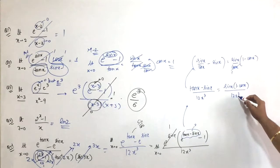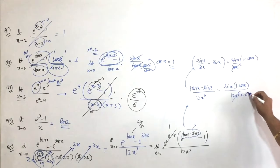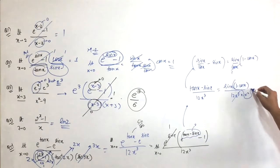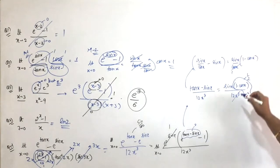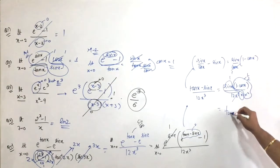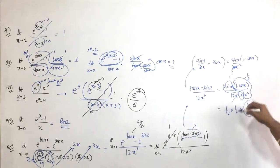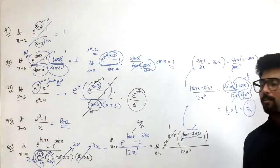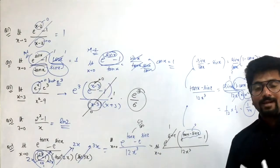Now sine x into 1 minus cos x upon 12 x cubed cos x. For sine x, divide and multiply by x. For 1 minus cos x, divide and multiply by x square. So sine x by x goes to 1, cos x goes to 1, and 1 minus cos x upon x square goes to half. So the expression is 1 by 12 into half, which equals 1 upon 24. So the answer is 1 by 24.